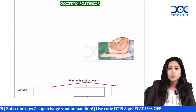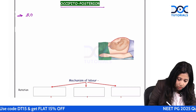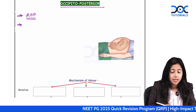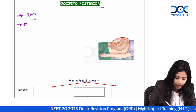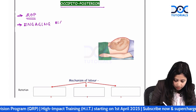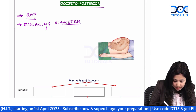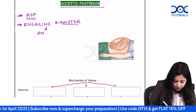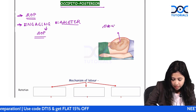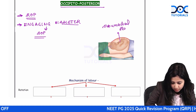In occipitoposterior position, most commonly it is right occipitoposterior. In right occipitoposterior, the engaging diameter is suboccipitofrontal. When you examine these patients there is subumbilical flattening.